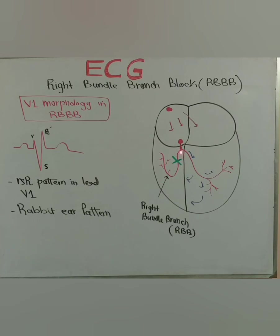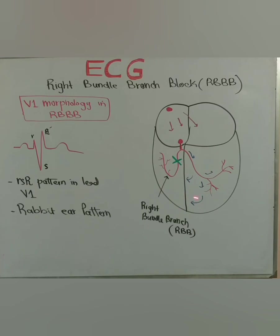Because of the blockage — due to ischemia, fibrosis, age-related changes, or other problems — there is no impulse transmission through the right bundle branch. The impulse that has gone into the left myocardium or left ventricle then finds its way through the muscles, jumping from one muscle to the other, and eventually enters the right myocardium, depolarizing the right ventricular muscles. This takes more time, making the QRS complex broader than three small boxes.